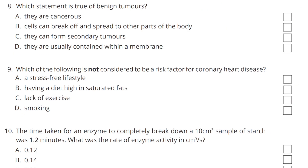Question 8. Which statement is true of benign tumours? Option A — they are cancerous — this is not true. Option B — cells can break off and spread to other parts of the body — this is also not true. Option C — they cannot form secondary tumours — so the answer must be D: they are usually contained within a membrane.